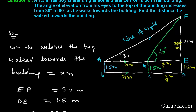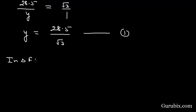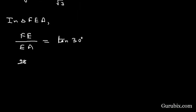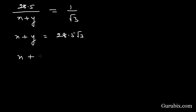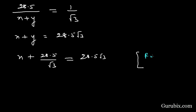Now in triangle FEA, we find the ratio of FE over EA, which equals tan theta where theta is 30 degrees. FE is 28.5 meters and EA is X plus Y. Tan 30 degrees is 1 over square root of 3, therefore X plus Y equals 28.5 times square root of 3. We know the value of Y from equation one: Y equals 28.5 over square root of 3.